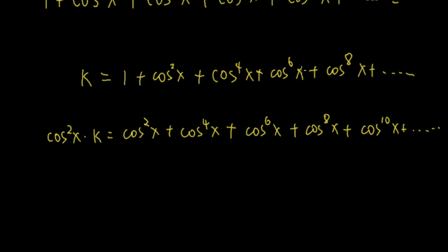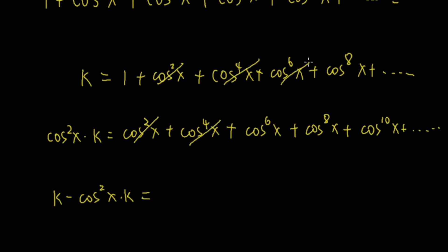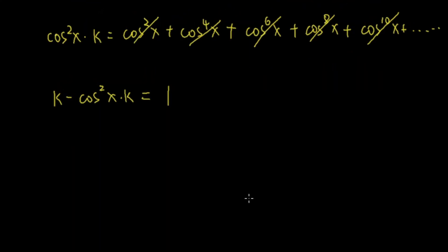Now what if I subtract the second series from the first series? On the left side it will be k minus cosine squared x times k. On the right side, cosine squared x cancels with cosine squared x, cosine to the 4th x cancels, cosine 6x cancels, cosine 8x cancels, cosine 10x cancels, and everything at the back cancels out. All I have left is just the 1, so it's equal to 1.